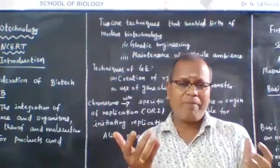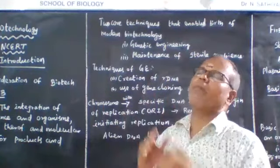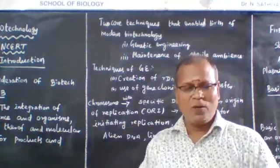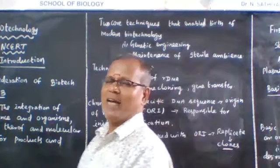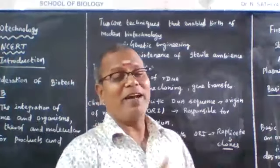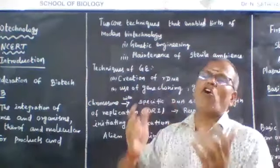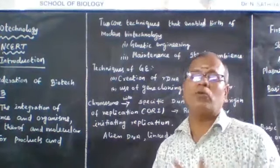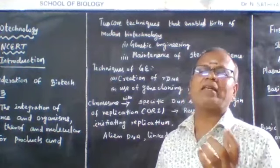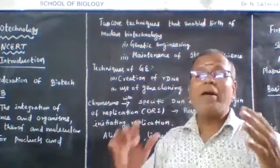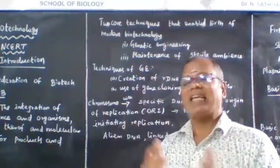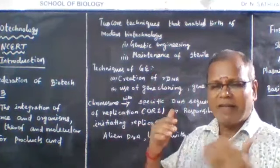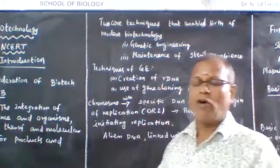We have to sterilize the instruments, the culture vessel, and the culture medium, which are placed at 121 degrees Celsius for 10 to 15 minutes in an autoclave. For non-living instruments, sodium hypochlorite, calcium hypochlorite, or mercuric chloride are used for sterilization. After establishing sterile conditions, modern biotechnology science is built.